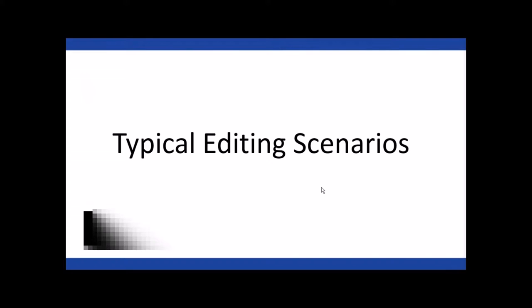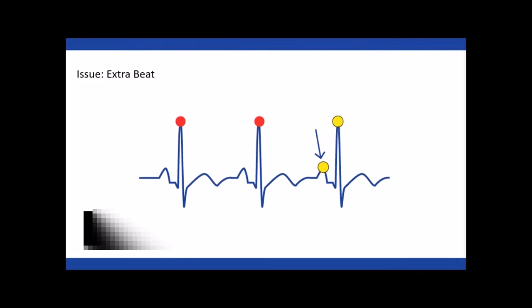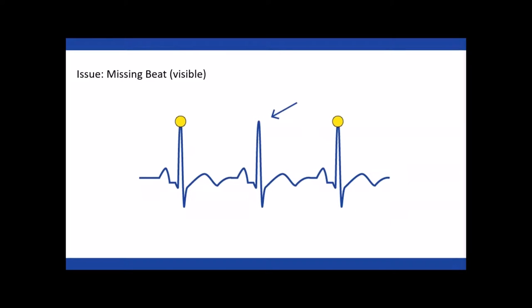Before getting into the application, I'll go over some typical editing scenarios from a high-level perspective using diagrams. One issue is seeing an extra beat that's been flagged — it could be on a P wave, T wave, or from high-amplitude noise between beats. When we see an extra beat like this, we want to delete it. When we see a missing beat and can visually tell there's an R peak, we want to insert it.